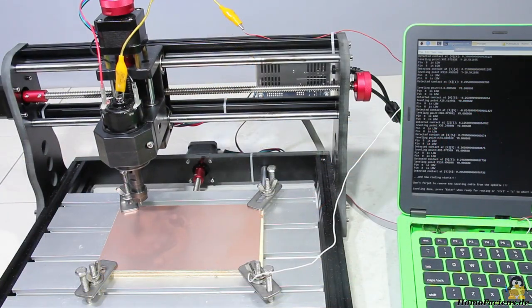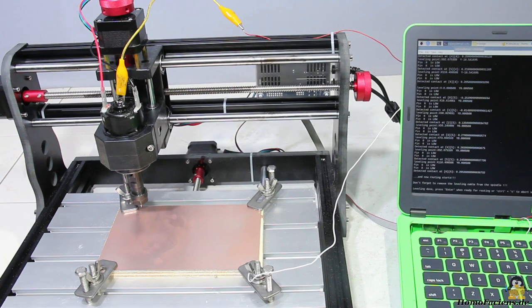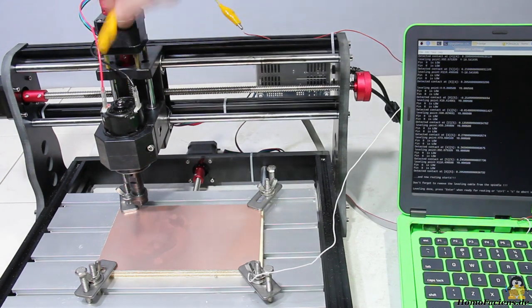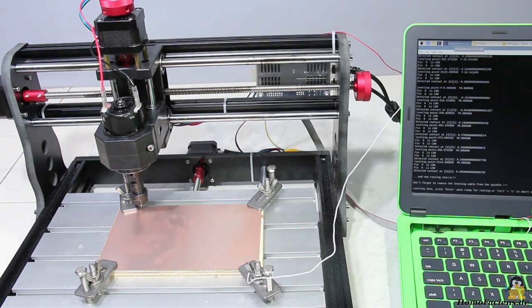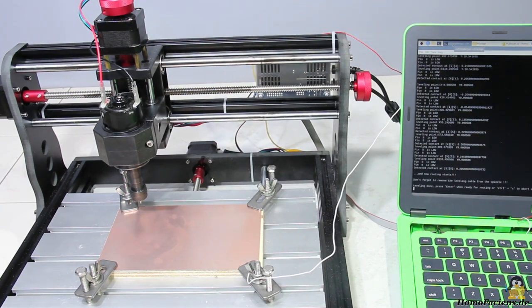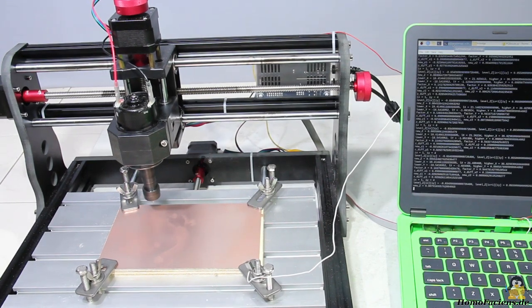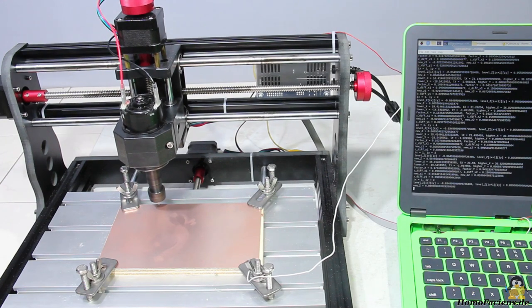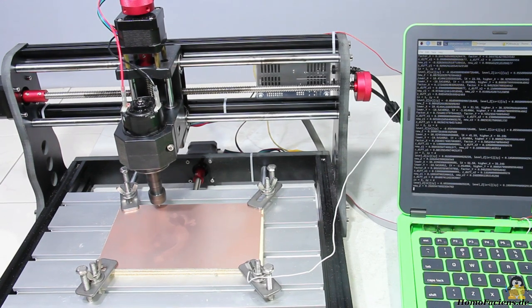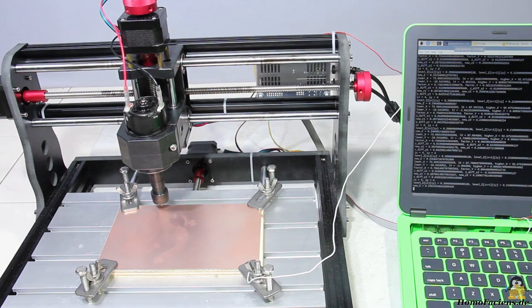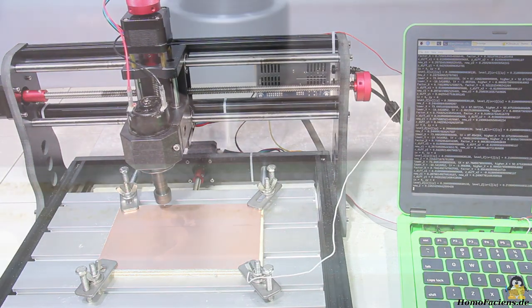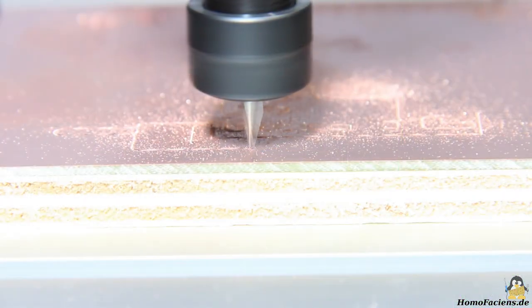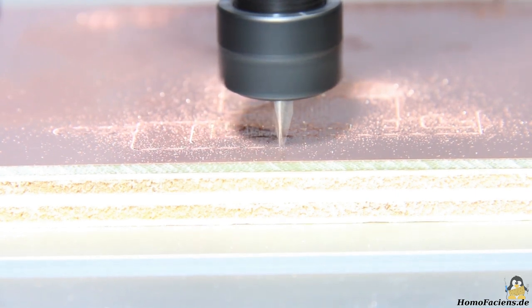Once the circuit board has been leveled, the script starts the milling process. My first attempts to mill a circuit board have failed, but giving up is only for the faint hearted. The solution I came up with is that the cut to the final depth is done in more than just one run.